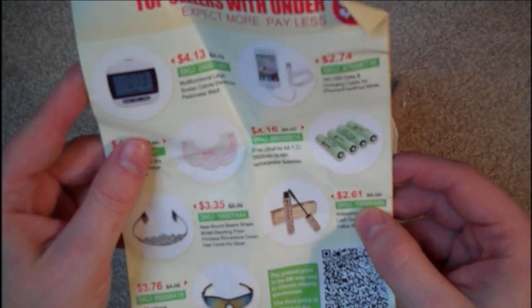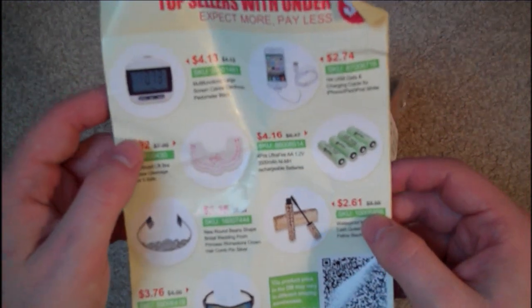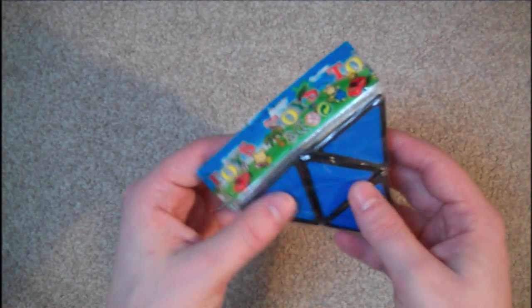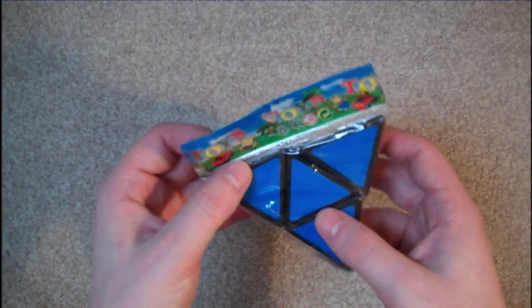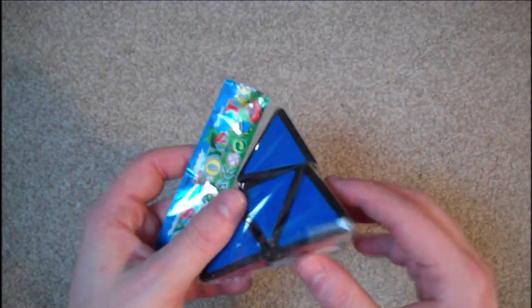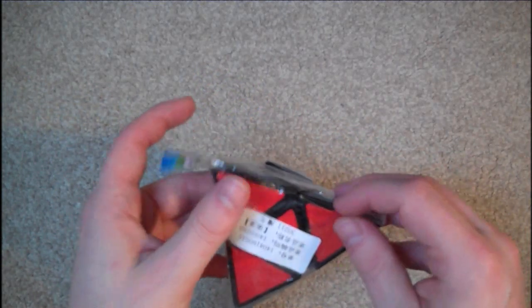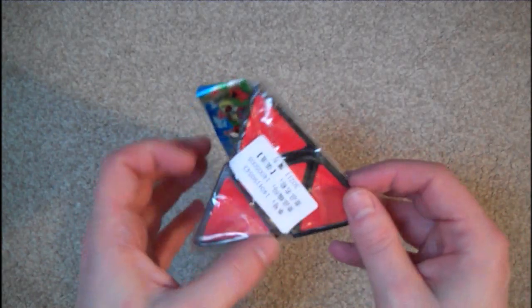So the only other thing in the packet is some sort of flyer advertising products on T-Mart. So I think this is actually a 2x2 shape mod. I can't remember how much this cost, I think it was only a couple of pounds.